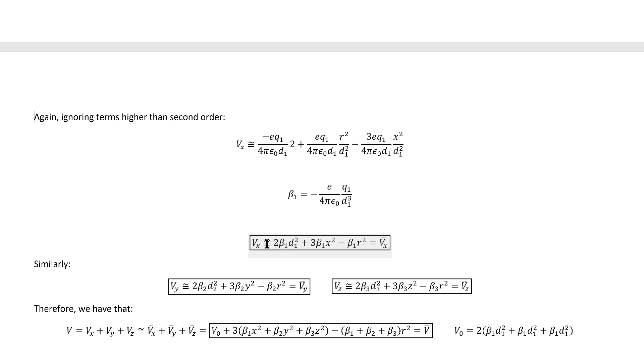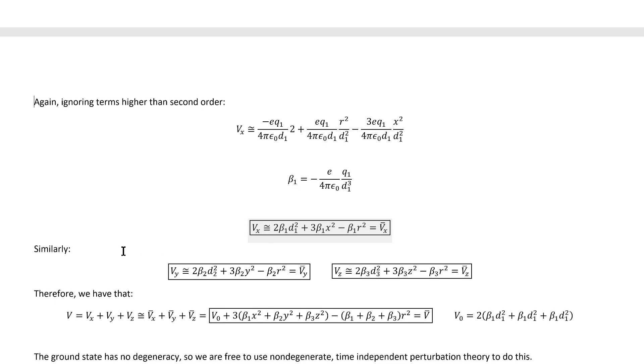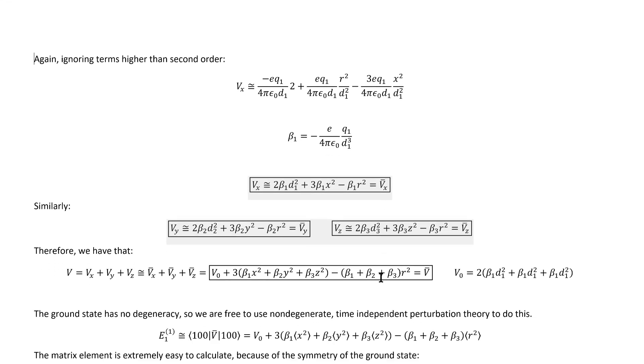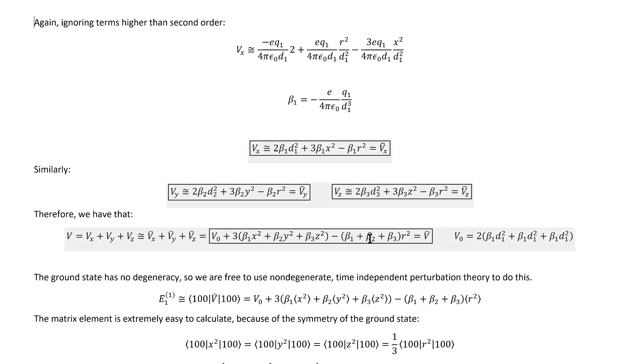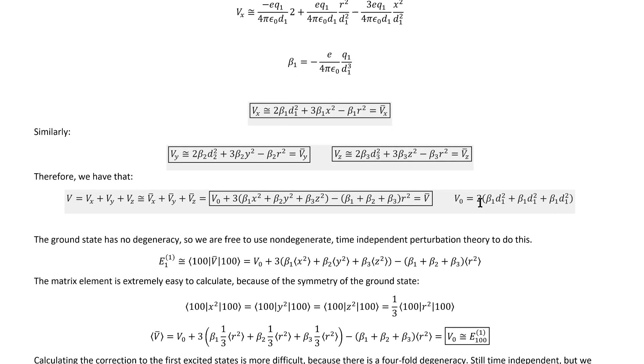Now, as I noted before, because of the form equivalence of the different terms in the potential, we have these results for those other terms, which ultimately gets us this expression for the complete quadratic order approximation to the perturbing potential, where I've defined one more constant there. And with this, we're ready to actually start calculating the correction to the hydrogen energy levels.